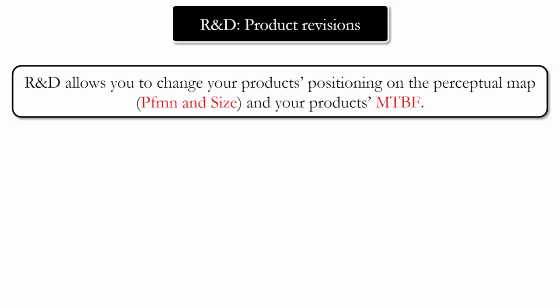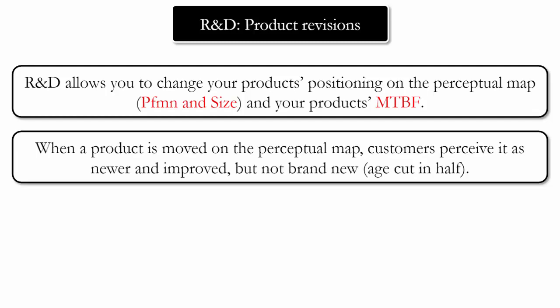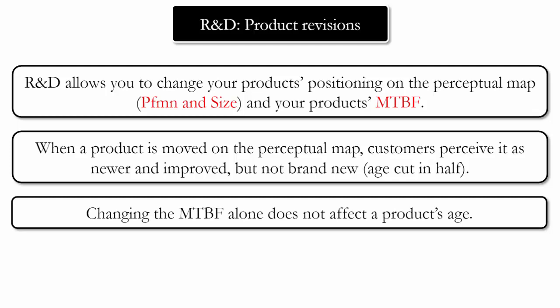Let's cover a few basic rules to keep in mind when playing the simulation. You will use R&D to make revisions to your products and to launch new products. In R&D, you can change the positioning of your products on the perceptual map, and you can also change the product's reliability by changing the MTBF. When a product is moved on the perceptual map, customers perceive it as newer and improved but not brand new, and the simulation will automatically cut the perceived age in half whenever you reposition your product. Changing the MTBF alone does not affect a product's age.